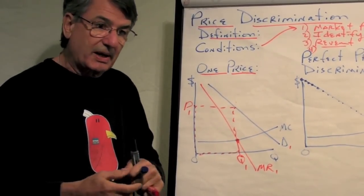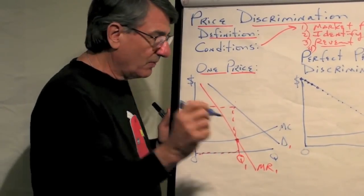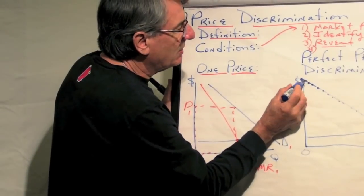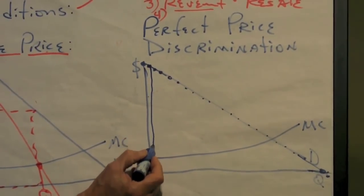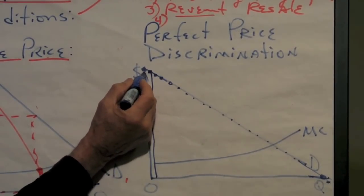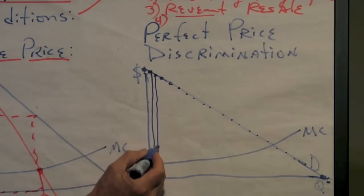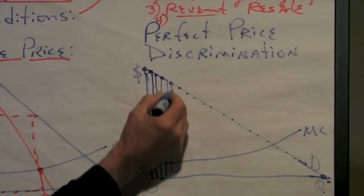But if they are able to price discriminate perfectly, they would charge each person the maximum they are willing to pay. And so this first person, if this is the maximum they are willing to pay, they would sell it to them for that and they would collect that much revenue from them. Say this is $90. And then there is the $89 person, and the $88, and the $87, and the $86, etc.